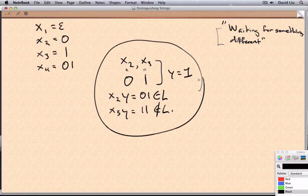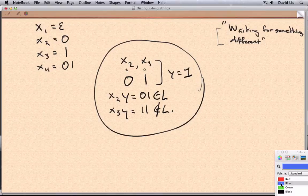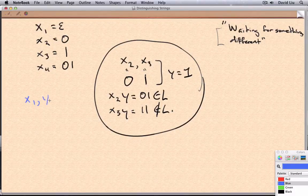We've distinguished between X2 and X3, so these two strings have to reach different states. Let's do one more, just for fun. Let's pick X1 and X4.